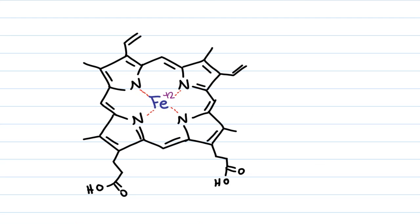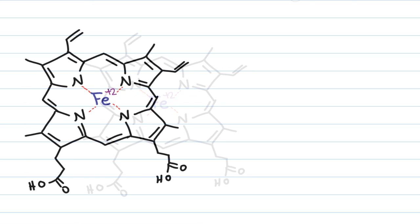Here's a close up of the heme group. Notice that you have the iron 2 plus in the center bound to 4 nitrogens in the imidazole ring. Imidazole comes from the amino acid histidine and this entire thing is bound to a histidine which is on the polypeptide chain and that will be critical for the structure later on. In addition to binding the 4 nitrogen atoms, the iron will also bind O2.